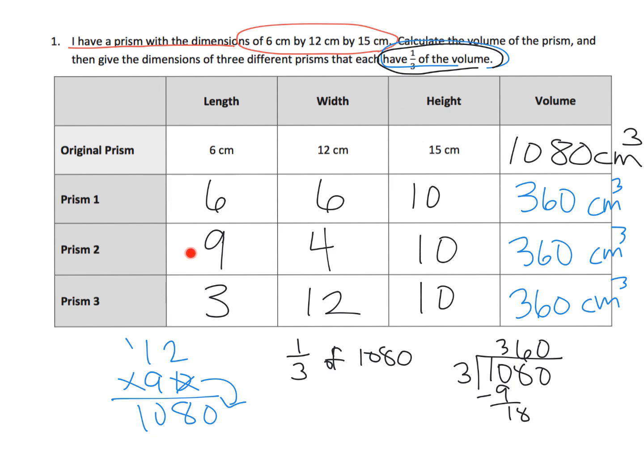So basically, if you think about what this is, this is 3 times 3 times 4. So I just took one of the 3s and multiplied it by the 4 and left the other 3 here. So that's a real shortcut, quick way of coming up with three possibilities for rectangular prisms that have a volume of 360 cubic centimeters.